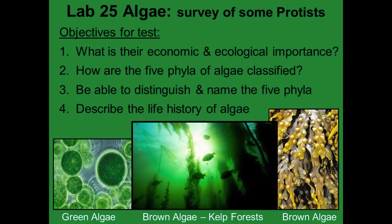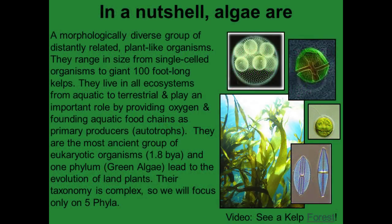There are some pictures here. We've got some green algae off to the left — typically they have green chlorophylls making them green. Brown algae has a different type of pigment used for photosynthesis that makes it brown, and those are commonly seen off the California coast in very large kelp forests. Not all brown algae are long kelp tree-like structures — some adhere to rocks and are more like grasses in the sea. In a nutshell, algae are a morphologically diverse group of distantly related plant-like organisms.